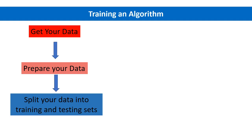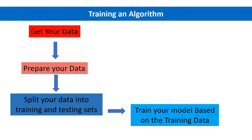After preparing the data, you split it into training and test sets. You use the training set to train the algorithm, and the test set to evaluate its performance. Most of the time you split 70/30 — 70% for training and 30% for testing — though this depends on the size of your data. With very large datasets, you usually reduce the testing set proportion.